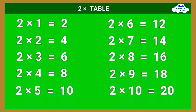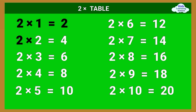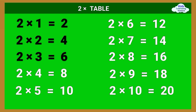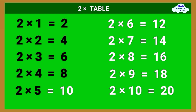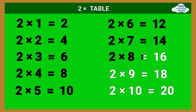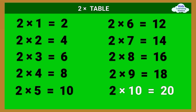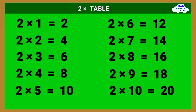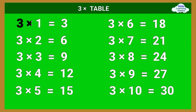2 times table: 2 times 1 equals 2, 2 times 2 equals 4, 2 times 3 equals 6, 2 times 4 equals 8, 2 times 5 equals 10, 2 times 6 equals 12, 2 times 7 equals 14, 2 times 8 equals 16, 2 times 9 equals 18, 2 times 10 equals 20.